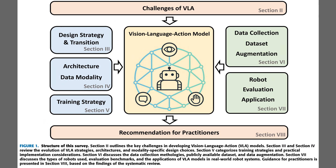Figure 1 lays out the roadmap, centering on a vision-language action model that links vision, language, and control. The left stack covers design strategy and transition, architecture and data modality, and training strategy, which define how the policy is built. The right stack highlights data collection and augmentation, plus robot evaluation and application, so deployment stays grounded. A top banner marks core challenges, and a bottom bar delivers practitioner recommendations.